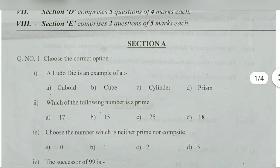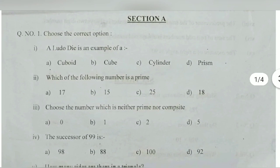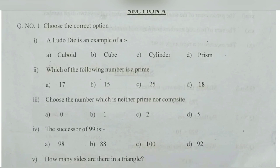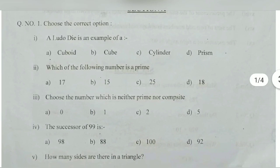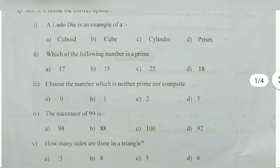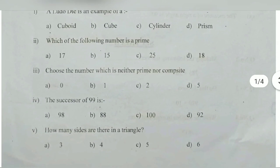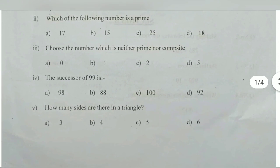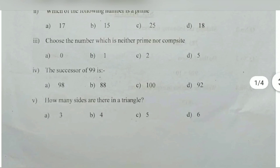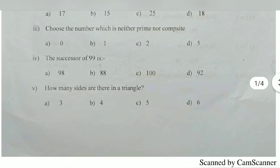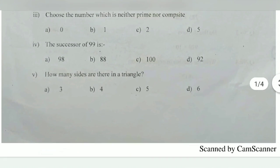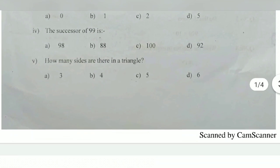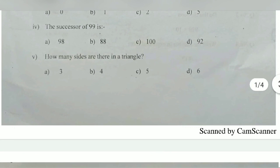Question number 1: A Ludo die is an example of cube, that's the correct answer. Which of the following number is a prime number? We can see that 17 is the prime number. Choose the number which is neither prime nor composite - that answer is 1. Successor of 99, so 99 plus 1 is 100. How many sides are there in a triangle? Triangles have 3 sides, so answer is 3.